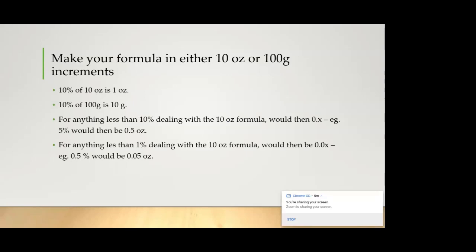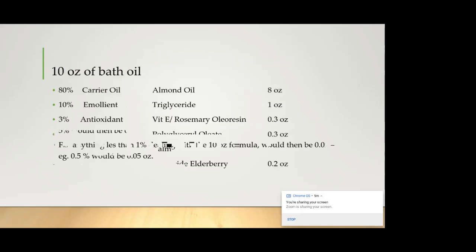Anything less than 1% when you're dealing with the 10 ounce formula would then be 0.0X, okay? So that means 0.5% would then be 0.05 ounces. So for anything less than 10 when you're dealing with ounces, you put a point before the number. For anything less than one, you put a point zero before the number.